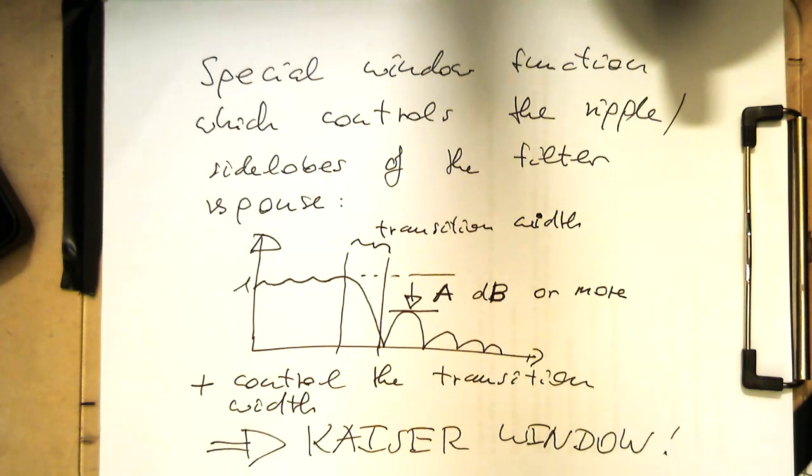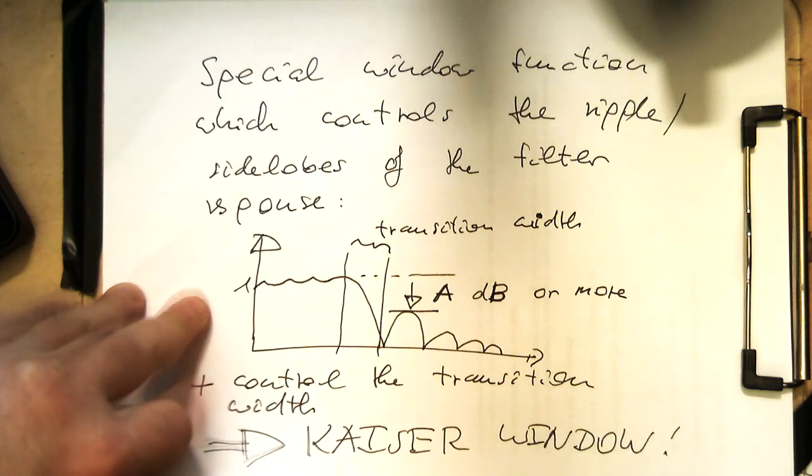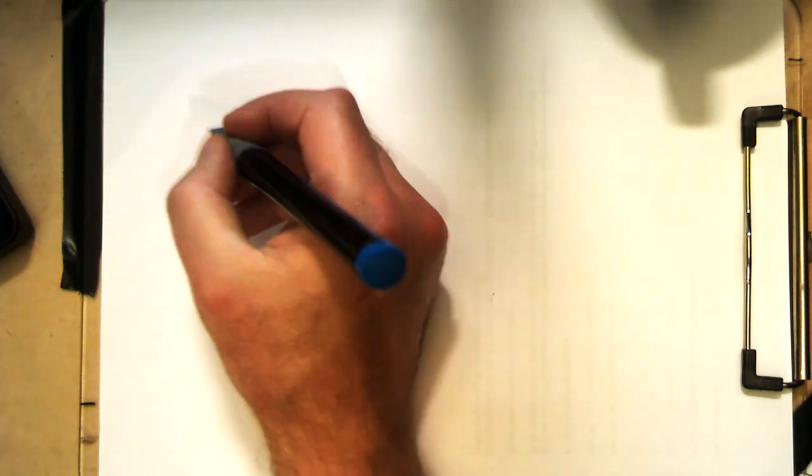So how is that done? With the Kaiser window, that's actually an empirical formula which is not necessarily grounded in very deep mathematical terms, but it gives us a very interesting direct result.